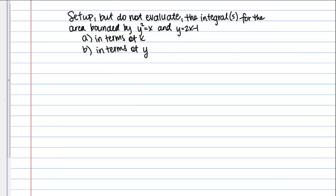The directions for this problem are to set up but do not evaluate the integral or integrals for the area bounded by Y squared equals X and Y equals 2X minus 1, part A in terms of X and part B in terms of Y.